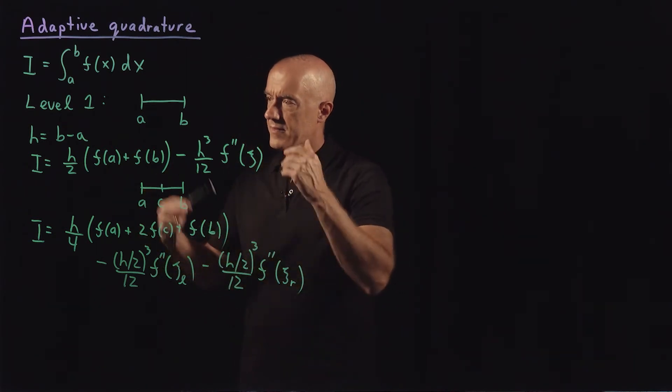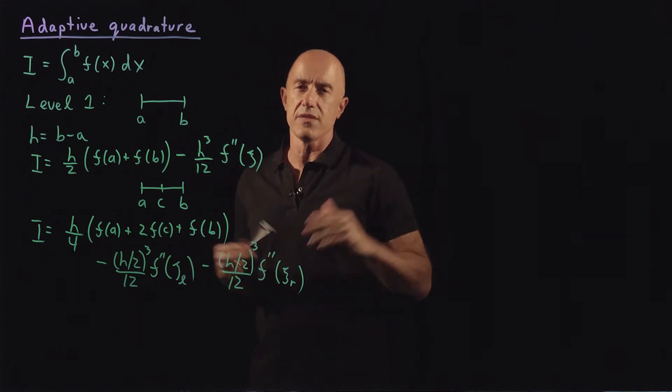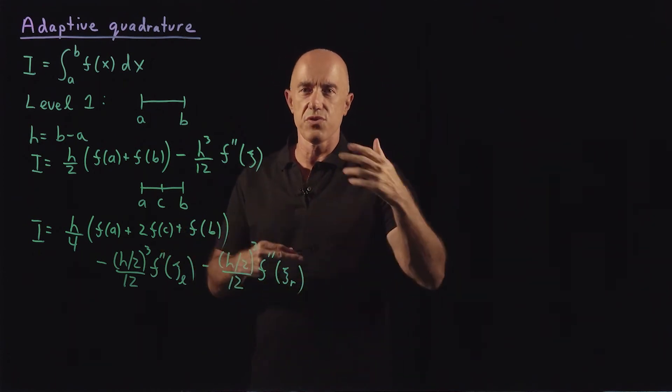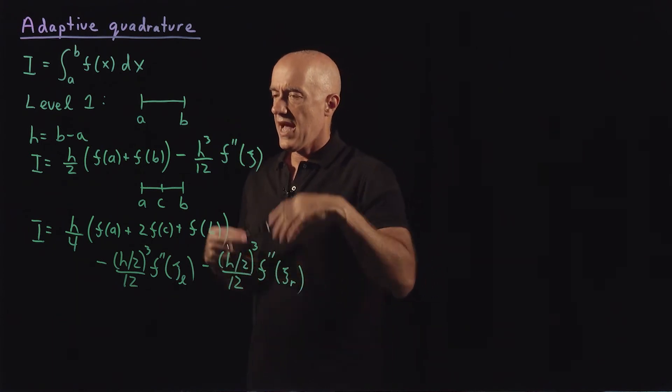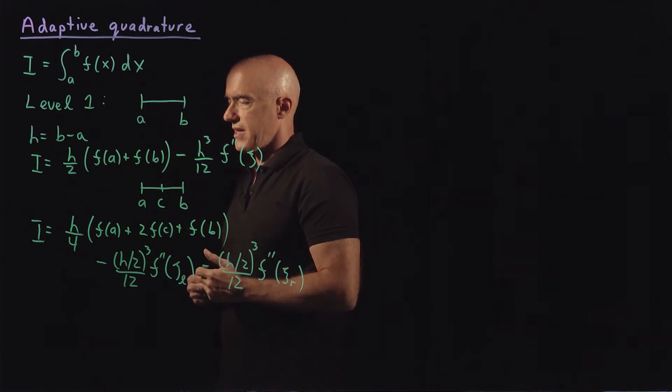We would have minus, now it would be h over 2 cubed over 12 times the second derivative of some ξ between a and c. So I'll call that ξ on the left side. Minus h over 2 cubed over 12 times the second derivative of f with ξ on the right side.